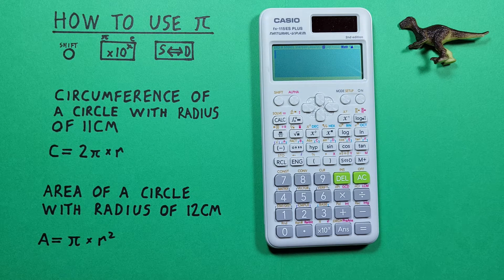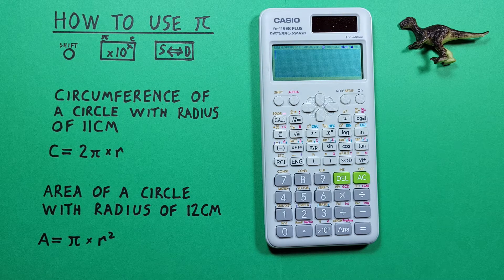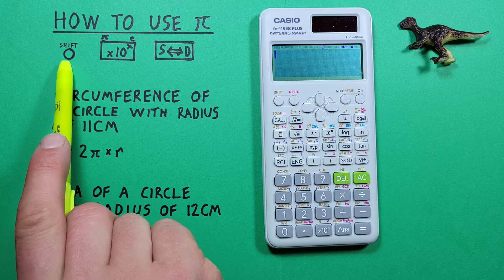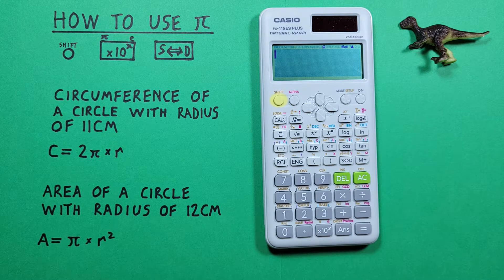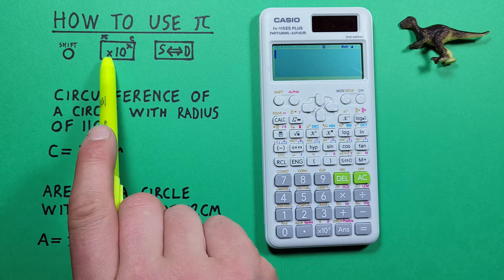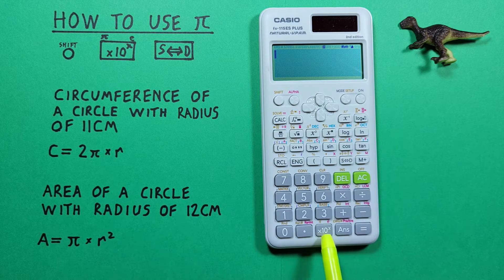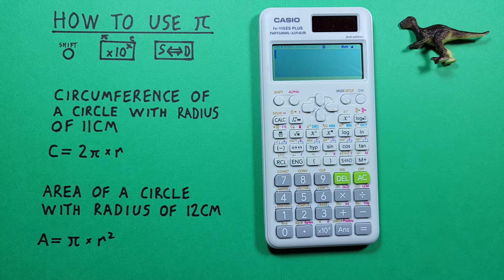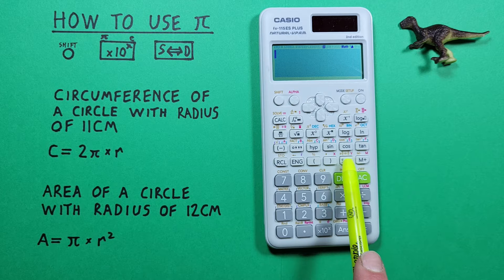To do that we'll use the shift key that looks like this located here, the times 10 to the x key with the shift function of pi that looks like this located here, and the s to d key or conversion key that looks like this located here.